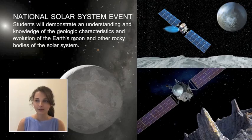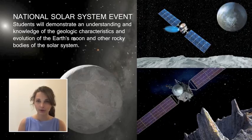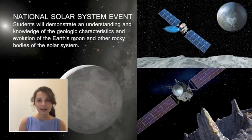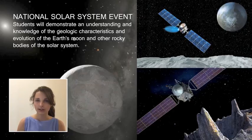This is the second year for Solar System in the B Division astronomy event rotation. In 2017 the B Division astronomy event was Reach for the Stars, and in 2018 the Solar System rocky body focus was on the inner Solar System.